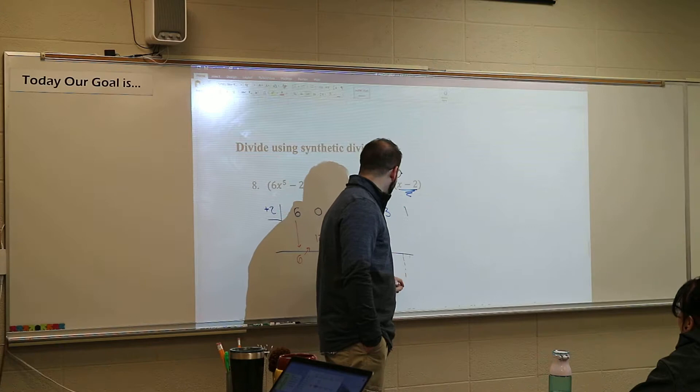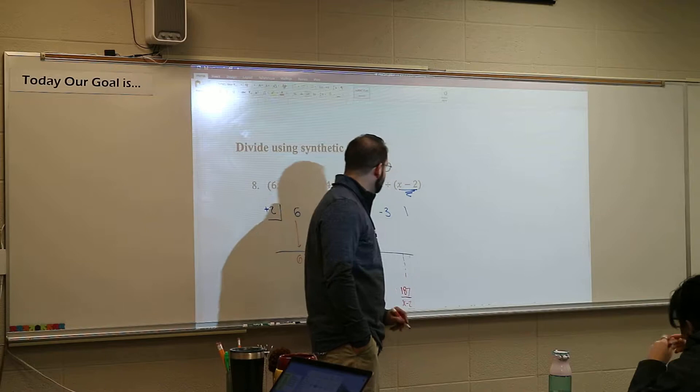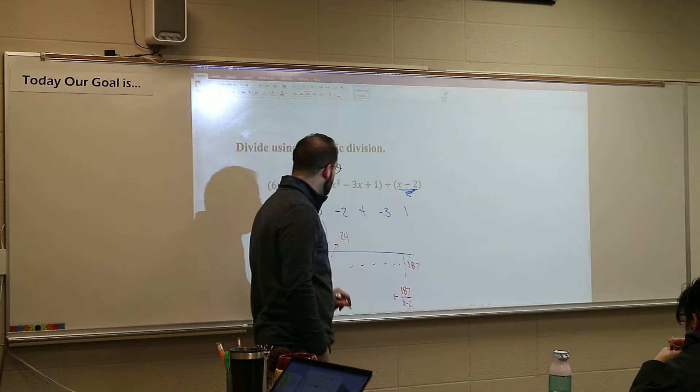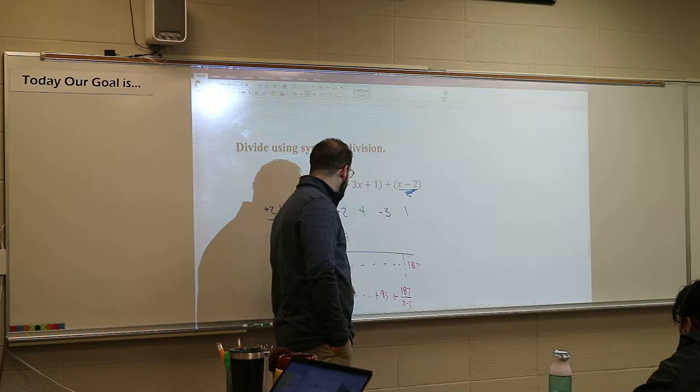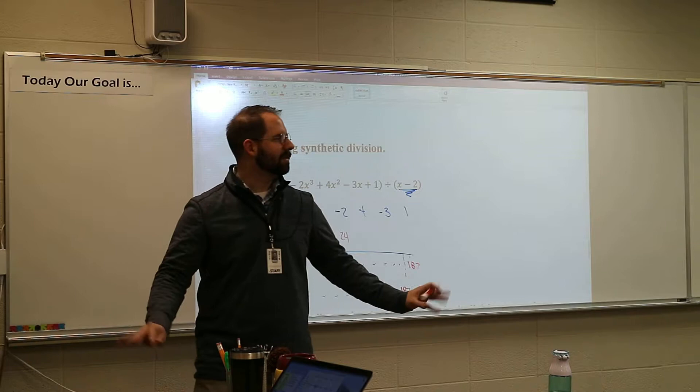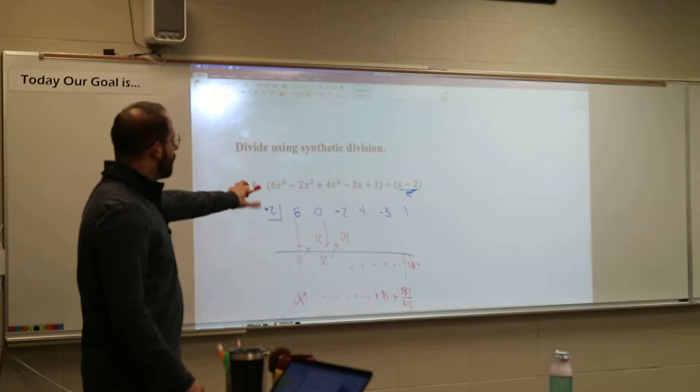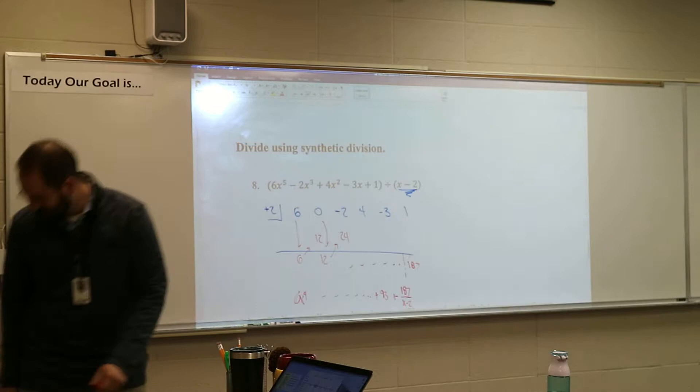Whatever this turns out to be, you have to make sure it's over (x minus 2). Whatever comes in front, you're going to build up the x until you get up to x to the 4th. I'm not sure what this number might be — but that's the idea.